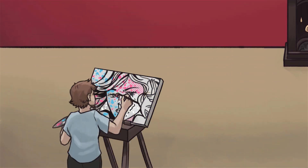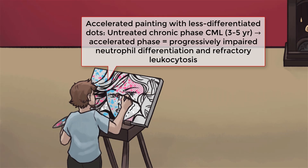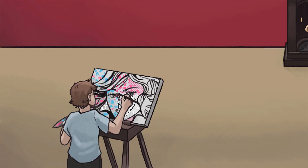CML progresses through three disease phases: chronic, accelerated, and blast. Most patients are diagnosed during the chronic phase, during which disease is more insidious and often asymptomatic. Untreated chronic phase CML progresses to an accelerated phase in three to five years. The accelerated phase is characterized by progressively impaired neutrophil differentiation and refractory leukocytosis. The left side of that painting is looking a little rushed — accelerated, if you will.